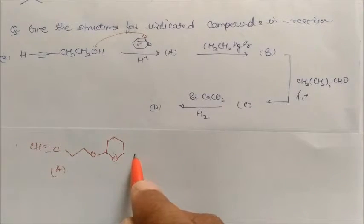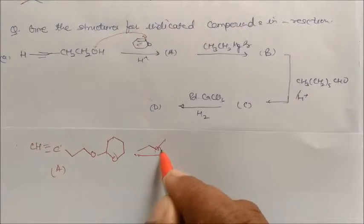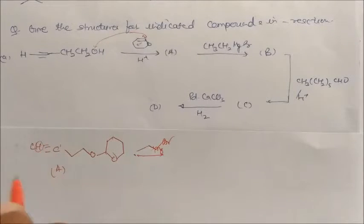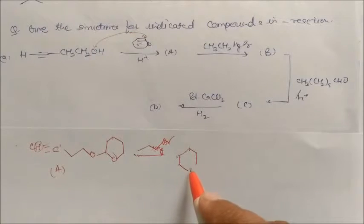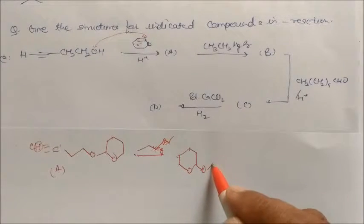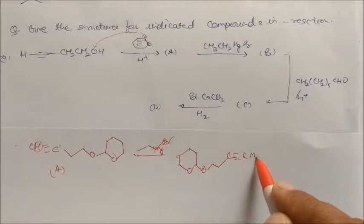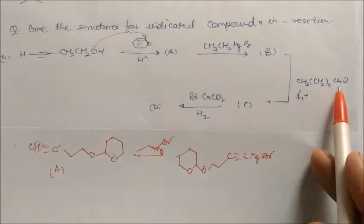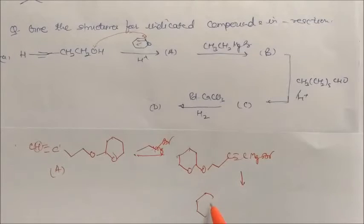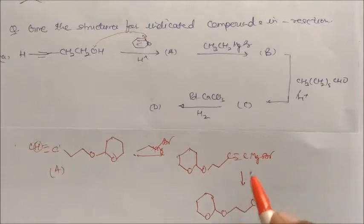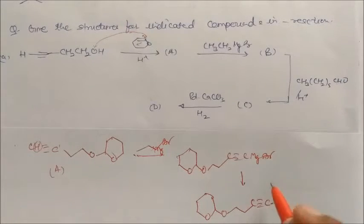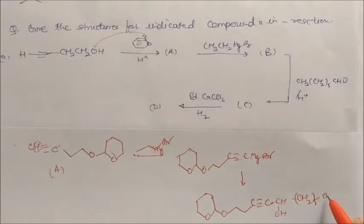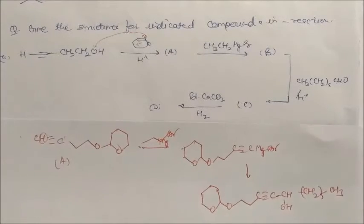This product A reacts with a Grignard reagent (MgBr). The MgBr reacts with the hydrogen, giving a product with oxygen and C≡C and MgBr. This then reacts with CH3(CH2)5CHO (an aldehyde). The carbon of the triple bond reacts with the aldehyde carbon to give product C: C≡C–CH(OH)–(CH2)5–CH3.